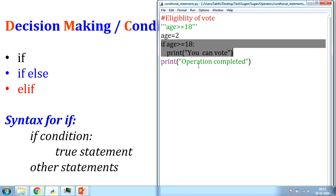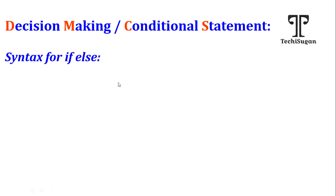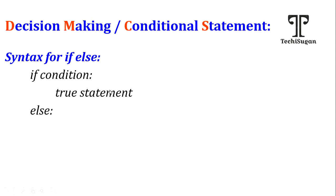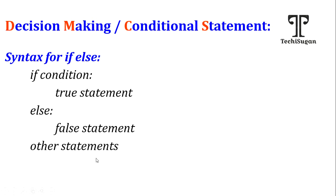Now let us go to another scenario. If my condition is false and I want some notification like 'you can't vote', how can I implement that? That can be done using if-else. The syntax for if-else is: if condition, true statement, followed by else colon. Keep in mind that if and else should be on the same indentation level, followed by the false statement.